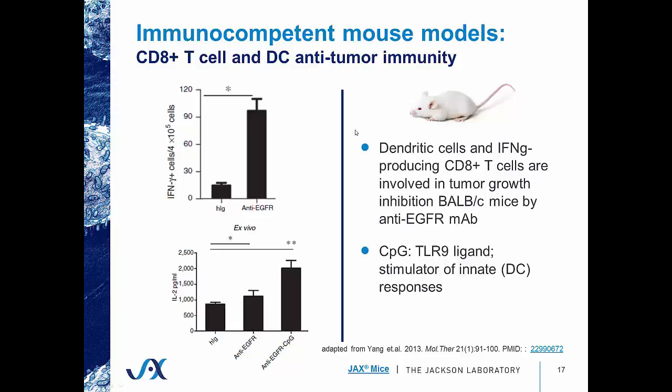The investigators also wanted to know whether dendritic cells play a role in anti-tumor immunity. They conjugated a CpG motif, which is a TLR9 ligand that stimulates dendritic cell responses, to their therapeutic antibody. When they administered this conjugated antibody, they saw higher levels of IL-2 production from dendritic cells, indicating that dendritic cells are also playing a role in this anti-tumor immunity. Together, this data demonstrates that immune cell populations in BALB/c mice are functional and can be used to assess the efficacy and mechanism of therapeutic antibodies.